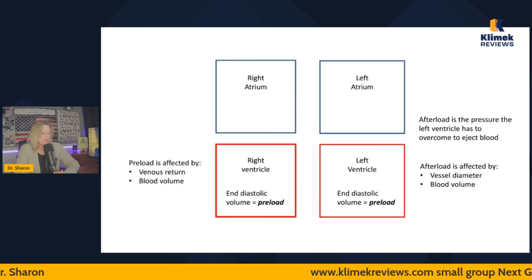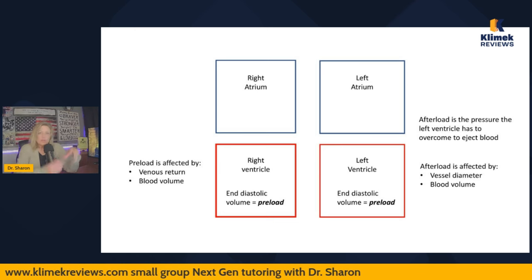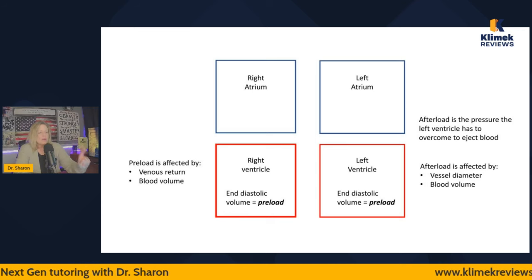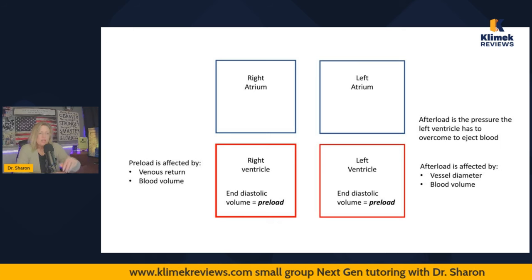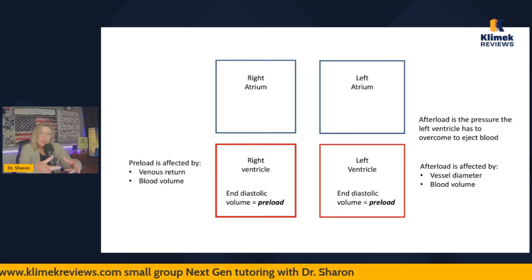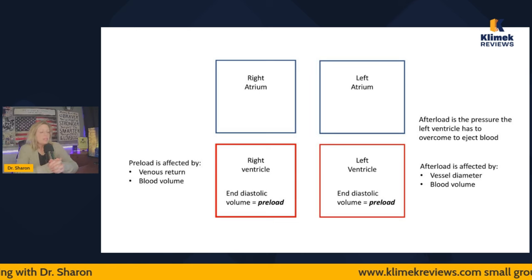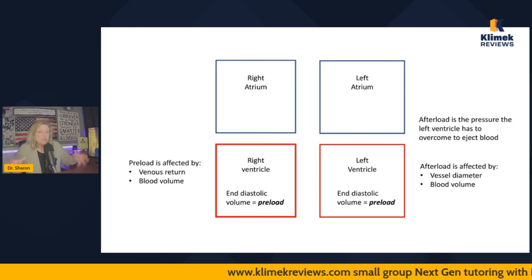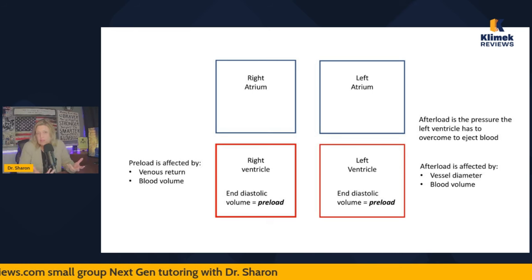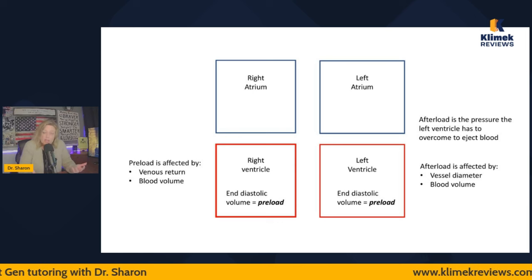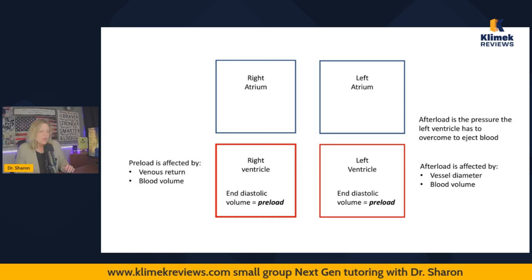I'm not good at drawing pictures, so instead of drawing a heart I just drew boxes — the right atrium, left atrium, right ventricle, and left ventricle, the four chambers of the heart. The right ventricle can have an end diastolic volume — that's preload. The left ventricle can have an end diastolic volume — that's preload. Preload is affected by venous return and overall blood volume. You can have great venous return, but if your overall blood volume is low, you'll have lower preload, and vice versa.